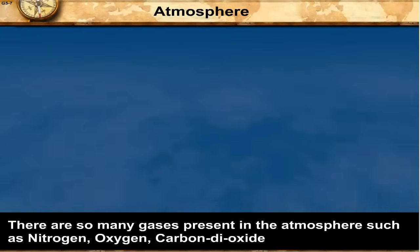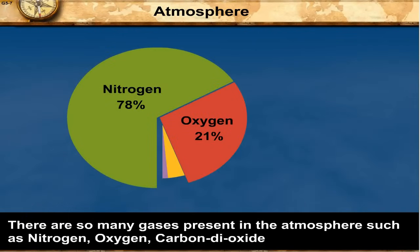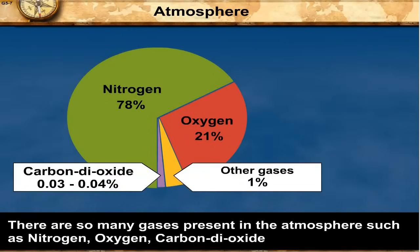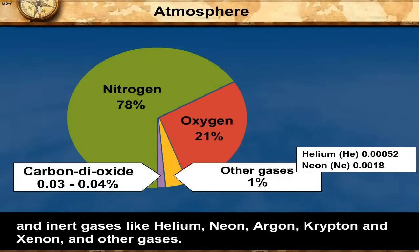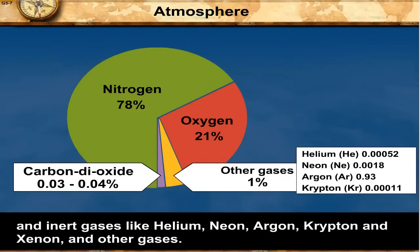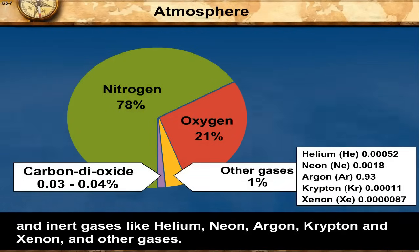There are so many gases present in the atmosphere such as nitrogen, oxygen, carbon dioxide and inert gases like helium, neon, argon, krypton and xenon and other gases.